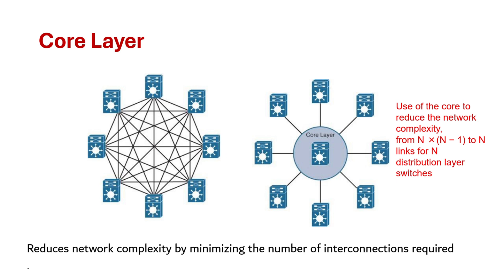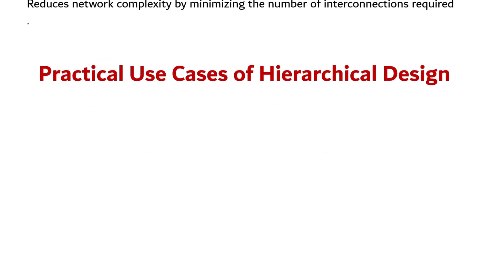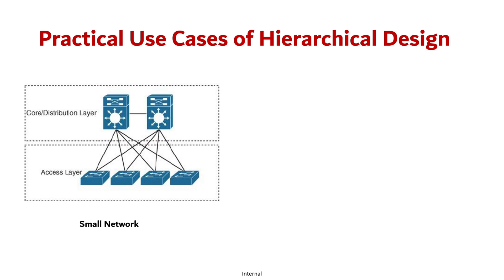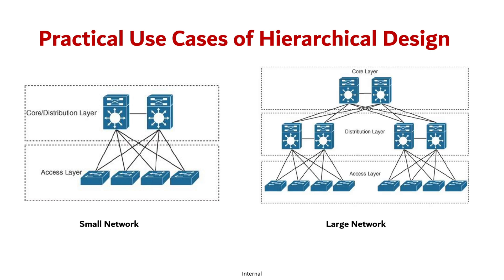Some practical uses of hierarchical design: the number of layers needed depends on the characteristics of the network deployment site. For a small network such as a single building, only the access and distribution layers may be necessary. For large networks like large campuses with multiple buildings, all three layers are implemented to ensure efficiency and scalability. If the network crosses more than two distribution layers, it is better to add a core layer. These two types of designs are also known as two-tier and three-tier design, which will be discussed in the next session.